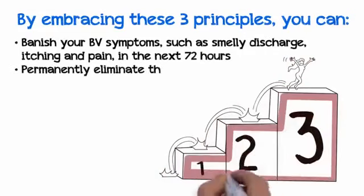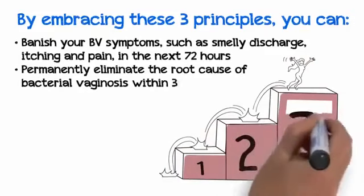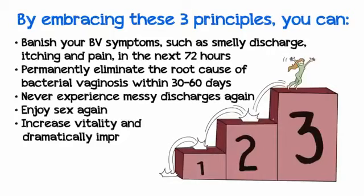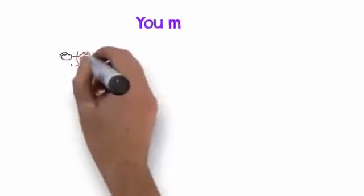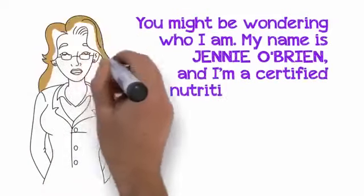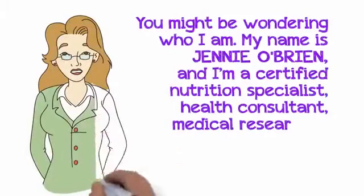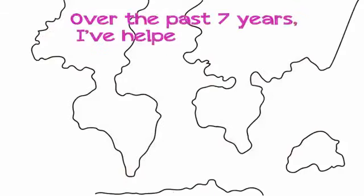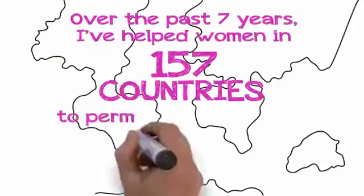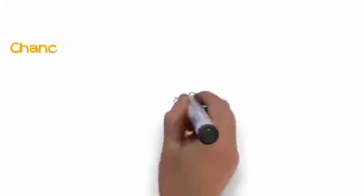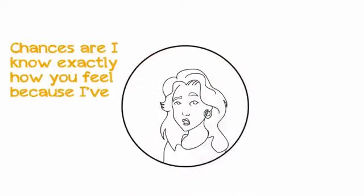Permanently eliminate the root cause of bacterial vaginosis within 30 to 60 days. Never experience messy discharges again, enjoy sex again, increase vitality and dramatically improve the quality of your life. You might be wondering who I am. My name is Jenny O'Brien, and I'm a certified nutrition specialist, health consultant, medical researcher, and author. I'm also a former BV sufferer. Over the past seven years, I've helped women in 157 countries to permanently eliminate their bacterial vaginosis, and today I would like to help you.